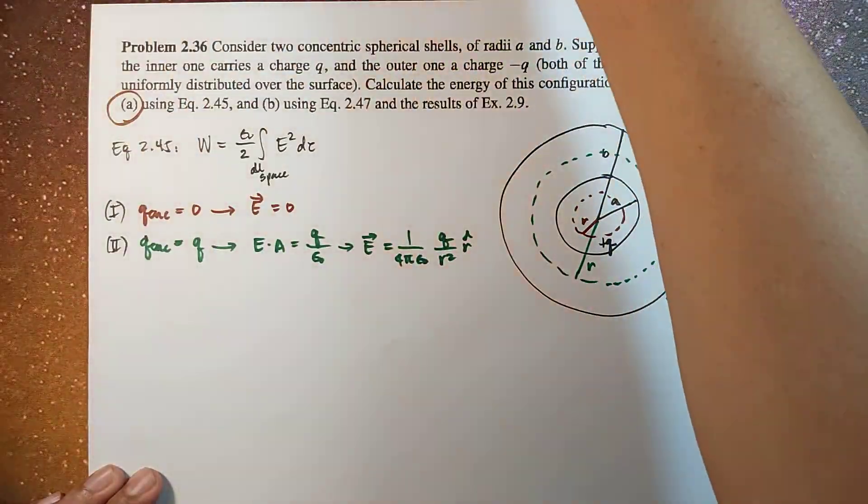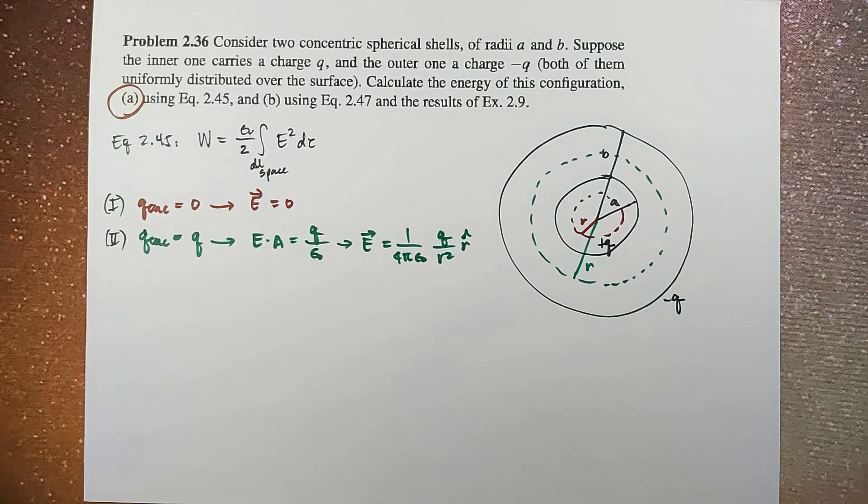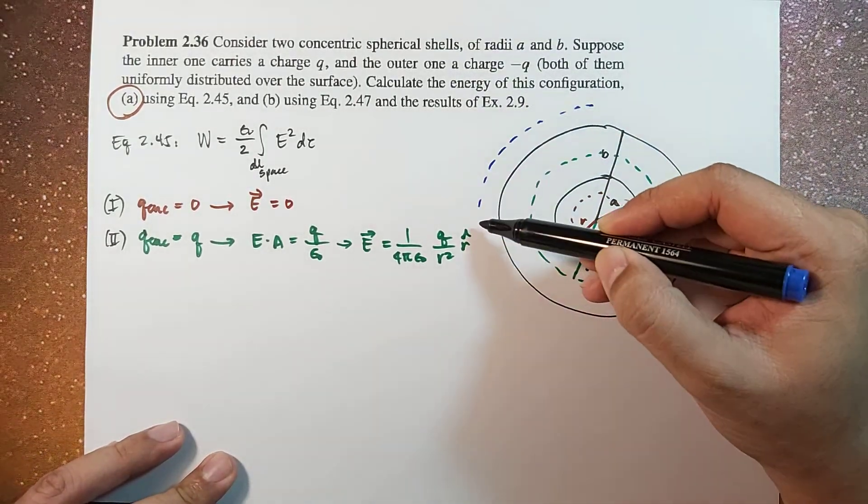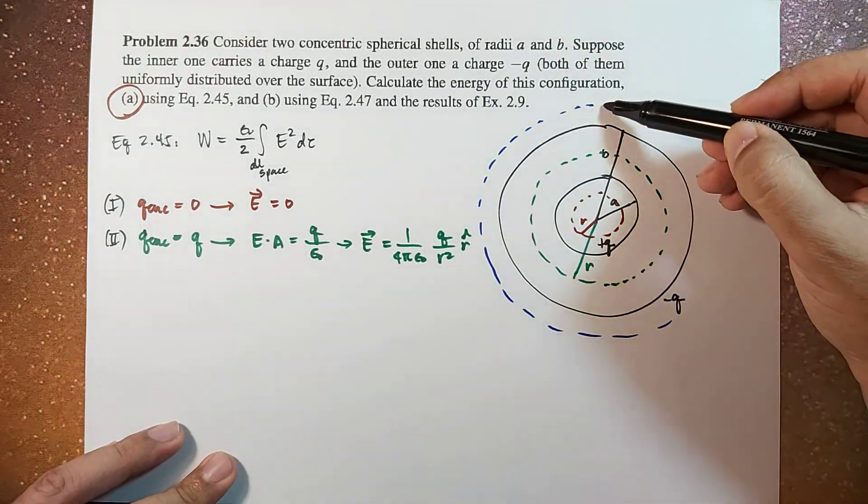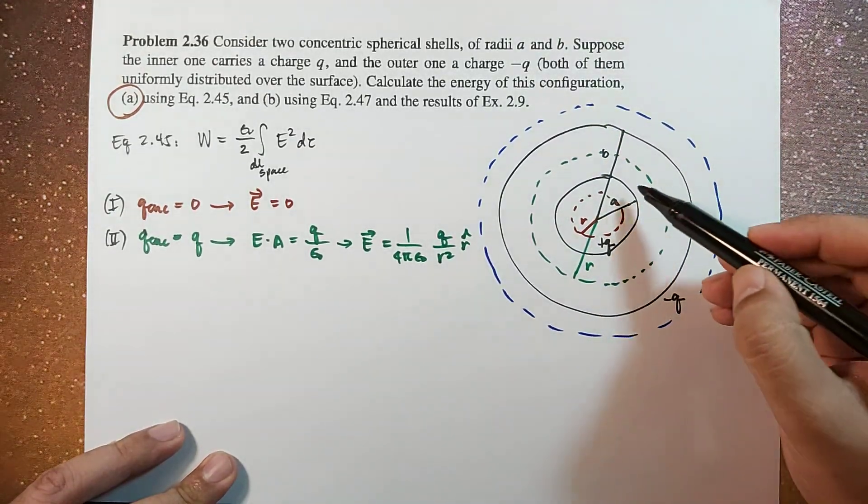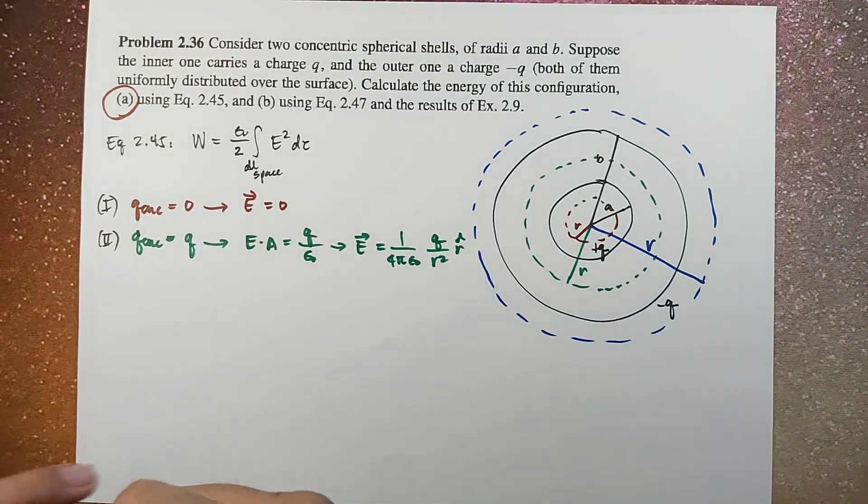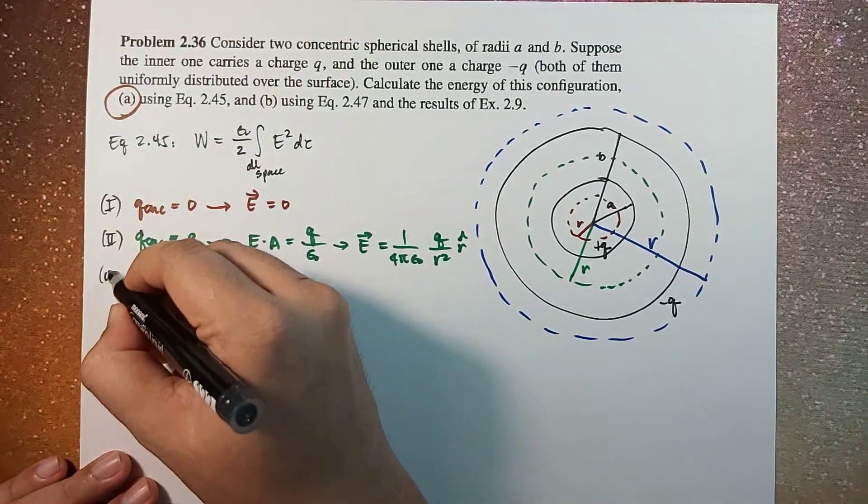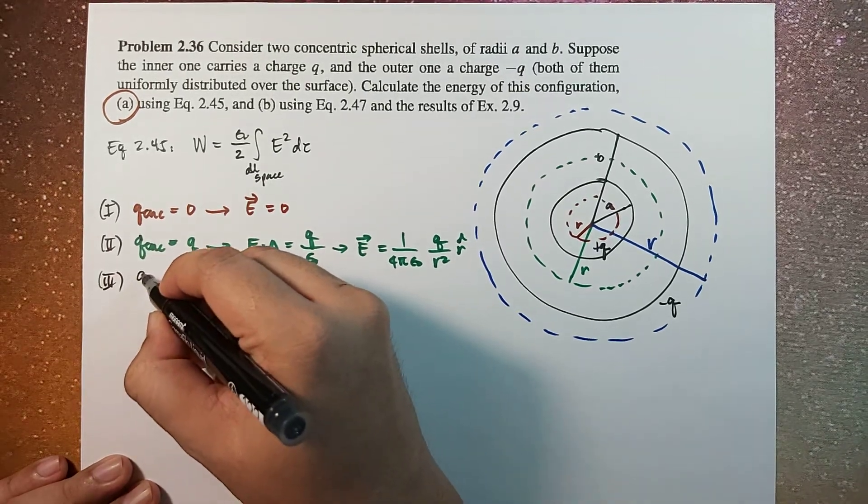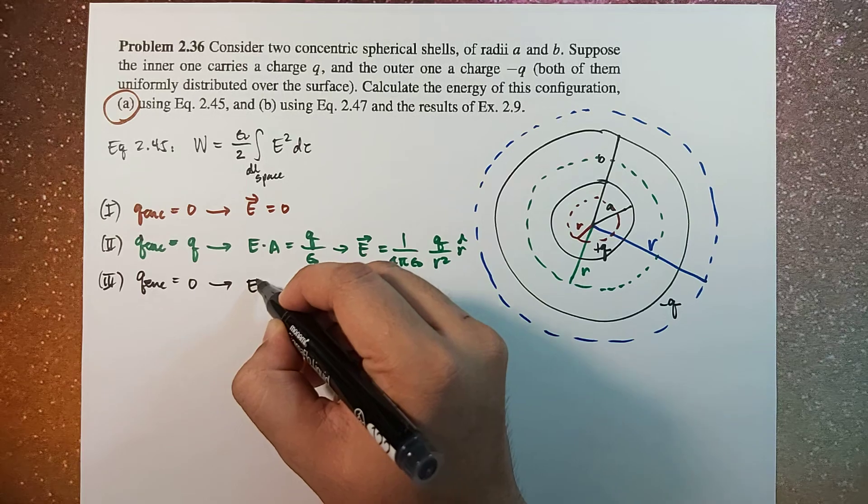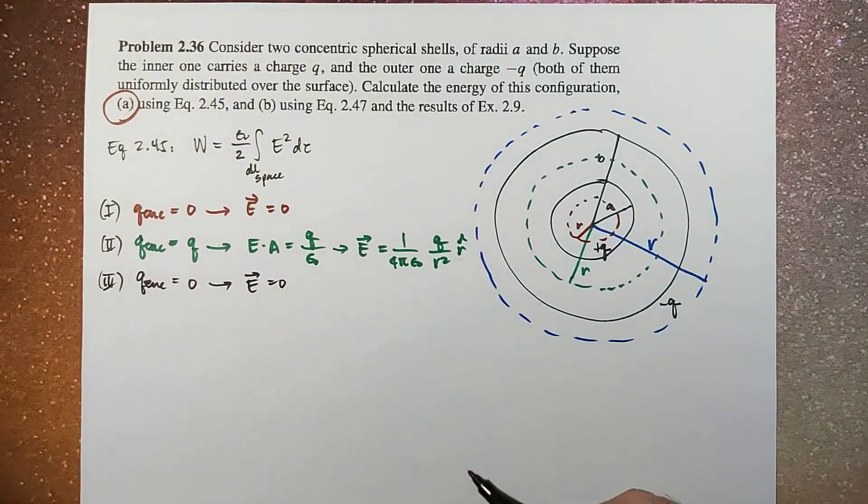And then the last one would be this region R number 3. Region number 3, Q enclosed is zero. So therefore, the electric field is zero.